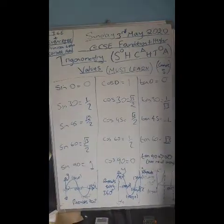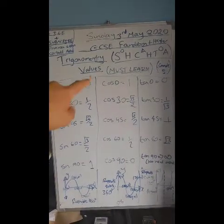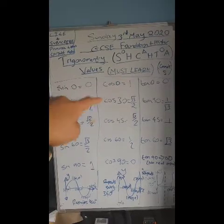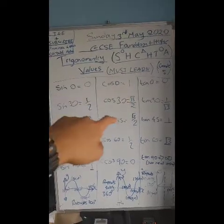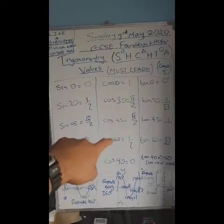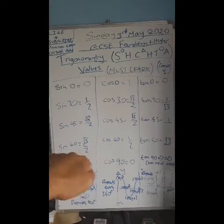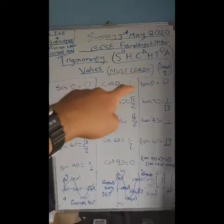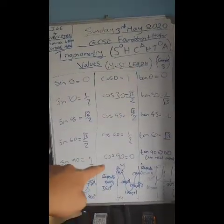For cosine: cos of zero is 1, cos of 30 is root 3 over 2, cos of 45 is root 2 over 2, cos of 60 is a half, cos of 90 is 0. That's what the cos graph looks like, it's like a little u-shaped.